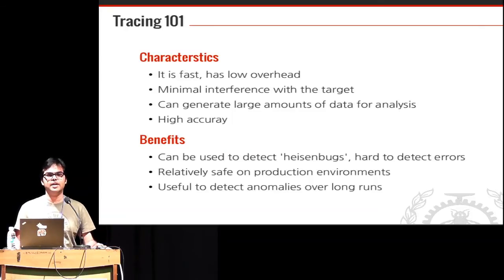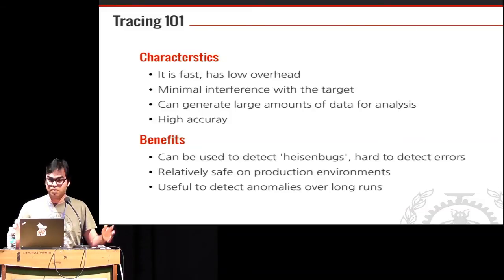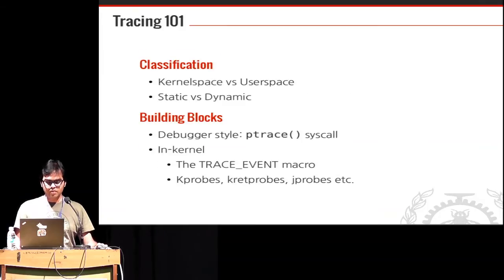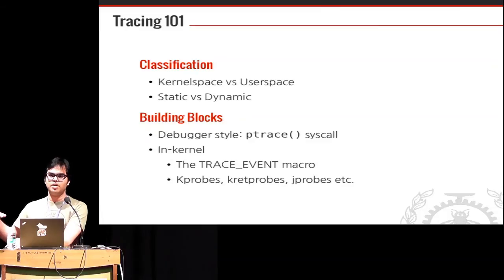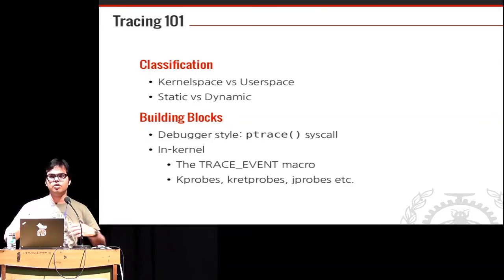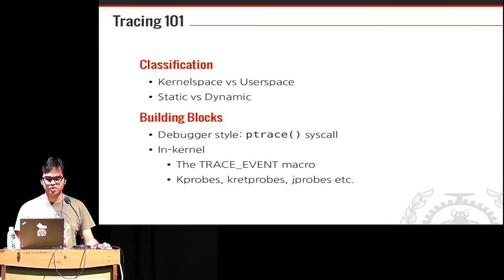The benefits are that you can use a tracer to detect Heisenbugs — hard-to-detect errors that occur sometimes and then don't. You can let a tracer run for a long time even on a production system and analyze traces later. A tracer can be classified as kernel space or user space. It can also be static — trace points inserted before compilation — or dynamic, where probes are inserted into a running binary.